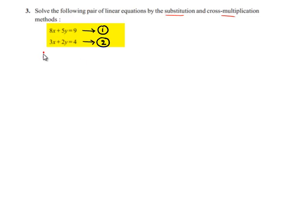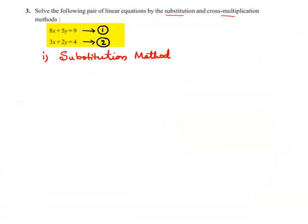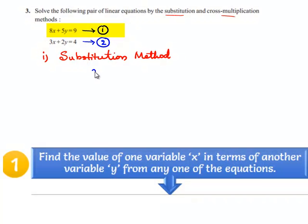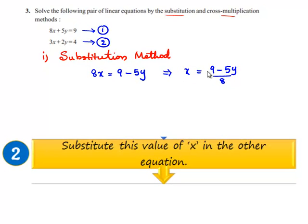The first method is substitution method. The first equation can be written as 8x is equal to 9 minus 5y. That implies x is equal to 9 minus 5y divided by 8. So let us substitute the value of x in equation number 2.